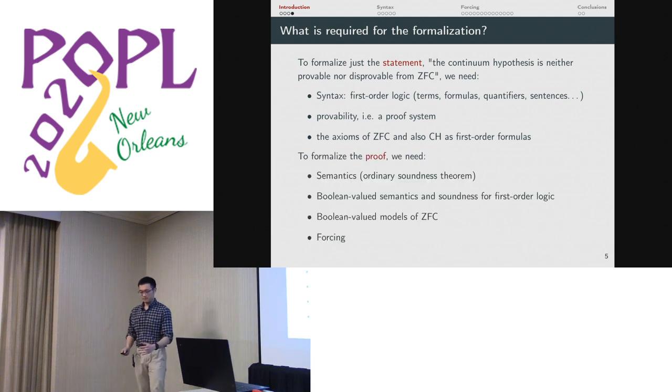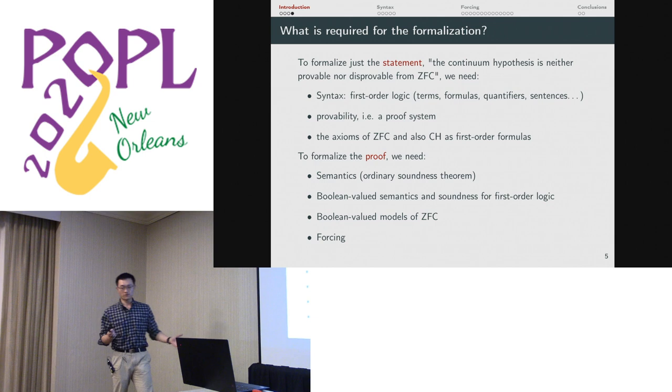That's just the statement. But for the proof, you have to do forcing. And to do forcing, you need models of ZFC. So you have to talk about model theory. You need the soundness theorem. We used Boolean-valued models. So we needed a Boolean-valued soundness theorem and semantics for first-order logic. And we had to do forcing, which could take up an entire slide with all the things we have to throw in. So these are all the ingredients that we had to do. And they have all been formalized.